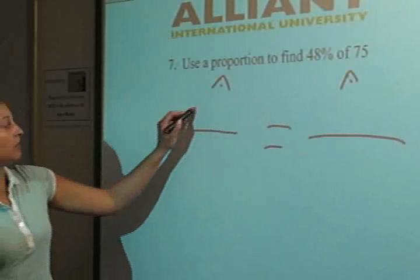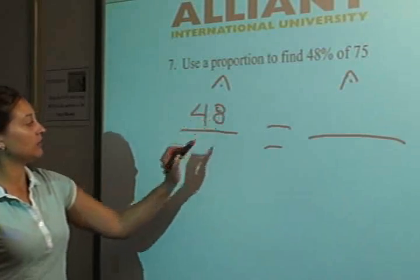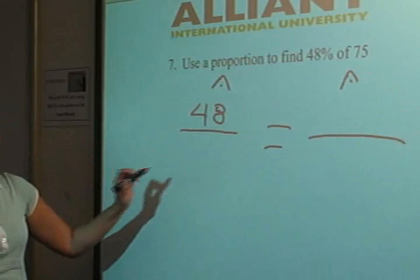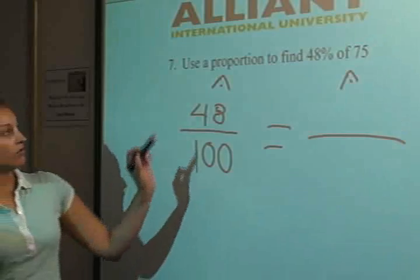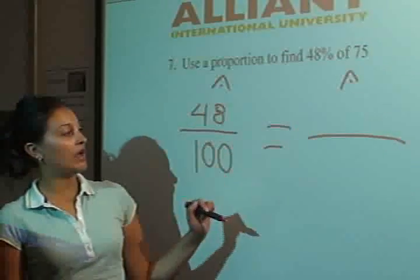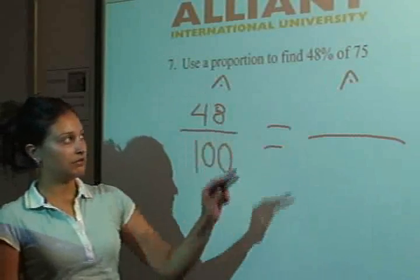So we are going to start with our 48% and put that on the top of this fraction. And then since we are finding a percentage, we are going to fill in the bottom with 100%. Over here we have 75 and you guys might be wondering where 75 goes.